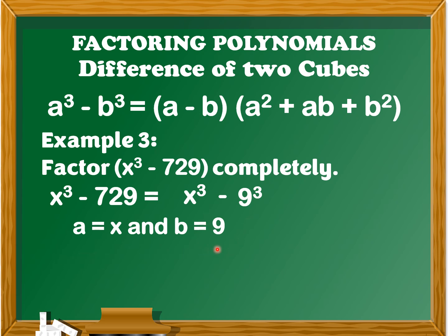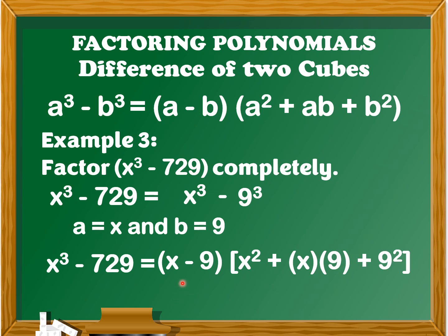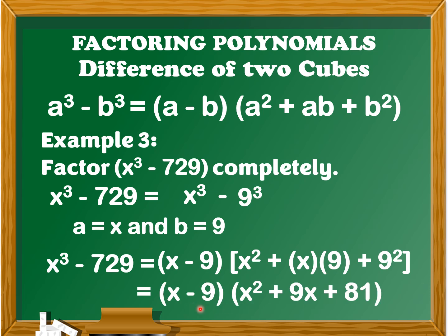After finding the value of a and b, we're going to determine the value of (a minus b) and (a squared plus ab plus b squared). So we have x cubed minus 729 is equal to (x minus 9) — that is the value of a minus b — and a squared is x squared, plus ab which is x times 9, plus b squared which is 9 squared. Simplifying, we get (x minus 9) times (x squared plus 9x plus 81). Therefore, x cubed minus 729 is equal to (x minus 9)(x squared plus 9x plus 81).